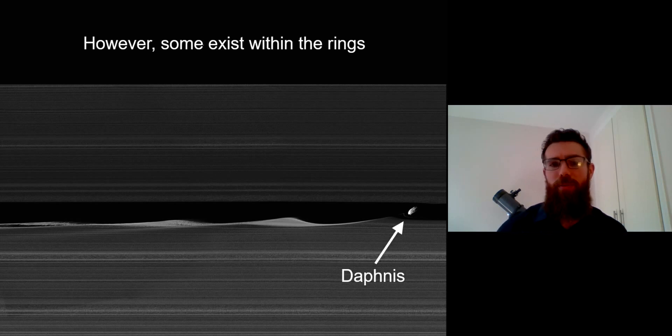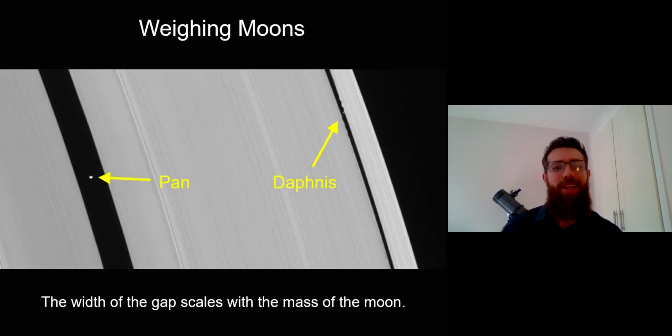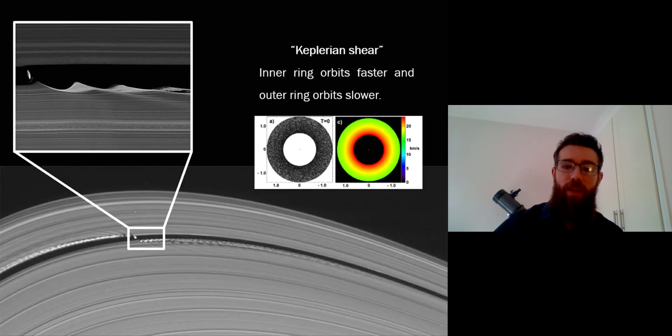The interesting thing about these moons inside the rings is that you can use the gap to weigh the moon. If we couldn't see the moons, we could still work out their size by how wide the gap is. You've got Pan on the left and Daphnis on the right—Pan is much bigger and creates a lot wider gap. We can use fairly simple mathematics to work out the width of the gap and the moon that caused it. This is quite useful because we can use it to look at rings around exoplanets that we can't see in greater detail, but we might be able to infer the size of a moon we can't actually see.